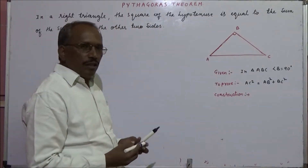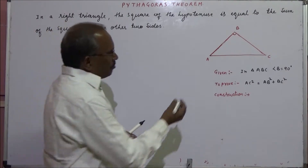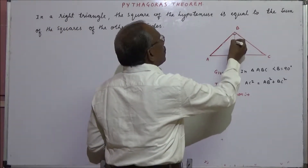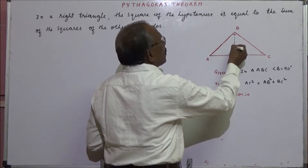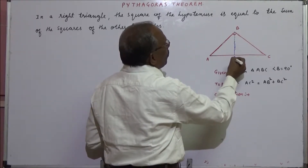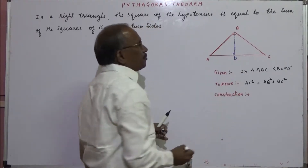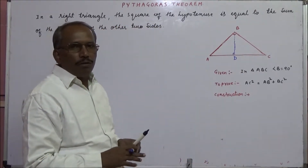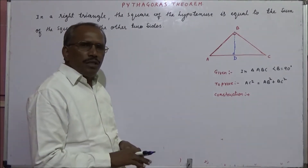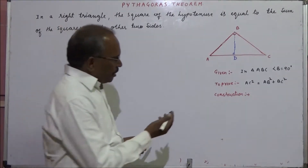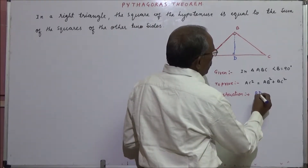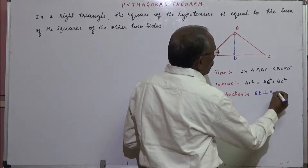So for this, we have to make some constructions. Draw BD perpendicular to AC. We can prove this theorem using similarity of two triangles. So the construction we have made here: BD is perpendicular to AC.